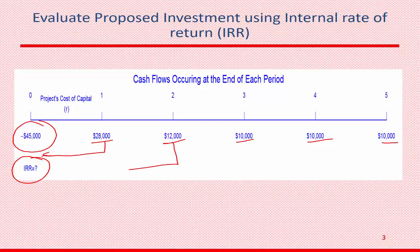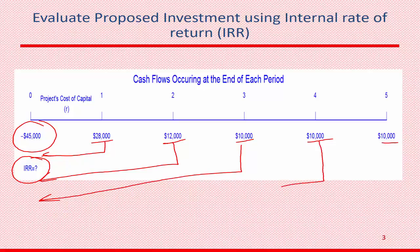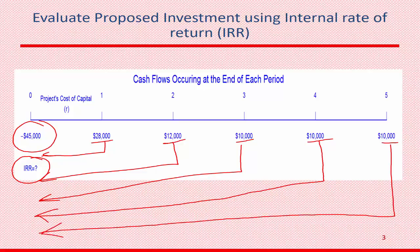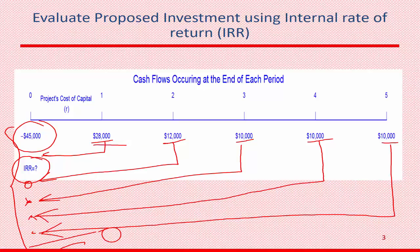You can discount all of these future cash flows back to the present. To discount them, you need some discount rate — and we don't know what that rate is yet. What rate of discount makes all the present values of these future cash flows add up so that, when summed, they equal the initial expenditure? That discount rate is called the internal rate of return, or IRR.